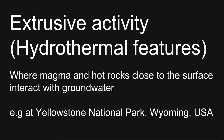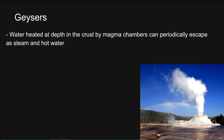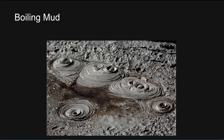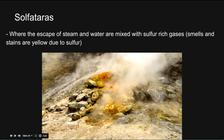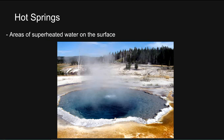Extrusive activity: this is where magma and hot rocks close to the surface interact with groundwater, for example at Yellowstone National Park. Geysers: water heated at depth in the crust by magma chambers can periodically escape as steam and hot water. A geyser is an intermittent turbulent discharge of superheated water. Boiling mud: this is where water is mixed with material on the surface. Sulfataras: where the escape of steam and water are mixed with sulfur-rich gases, which smells and stains yellow due to the sulfur. Fumaroles: areas where superheated water turns to steam as it evaporates on the surface. Finally, hot springs: areas of superheated water on the surface.